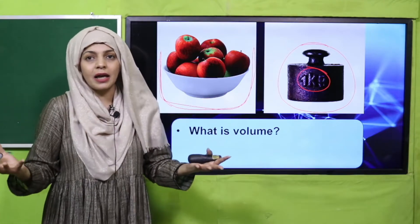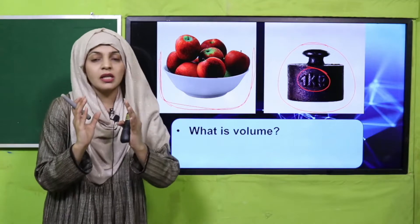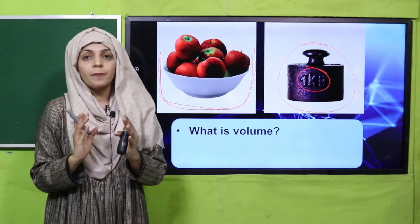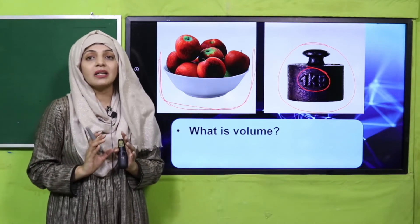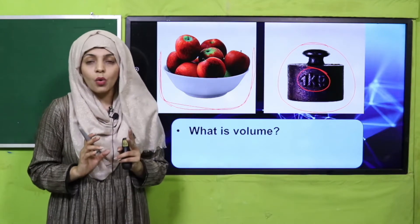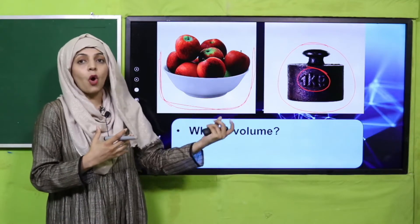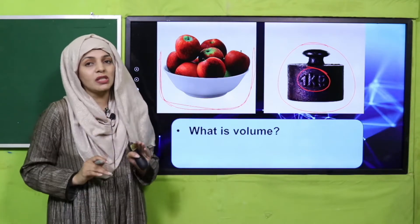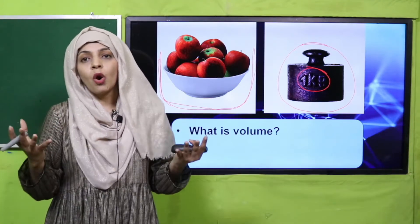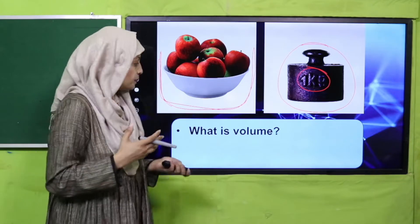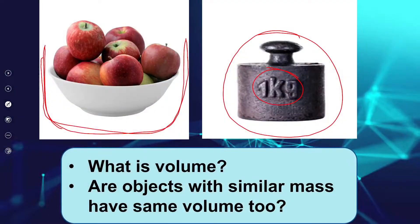But how much space are they occupying? The apples are occupying more space. The metal bar is also 1 kg but it occupies a little space. So the space an object occupies is its volume. The volume of apples is more; the volume of the metal bar is less. The mass is similar, but the volume is different. So if the mass is similar, it is possible that the volume is different. Objects with similar mass do not necessarily have the same volume.